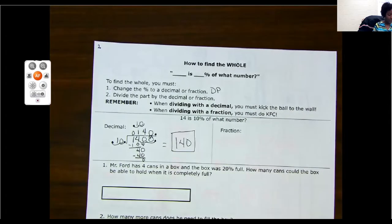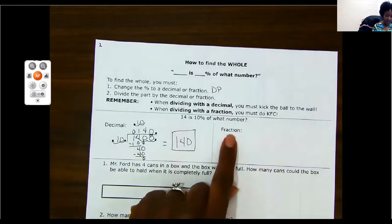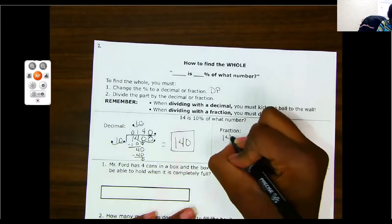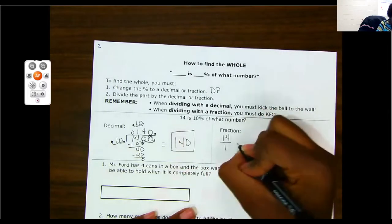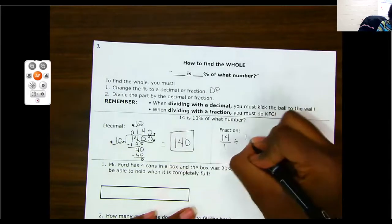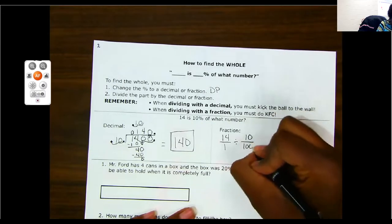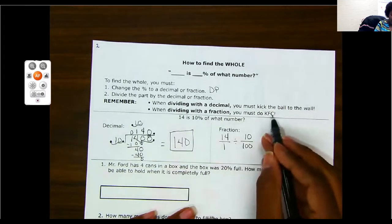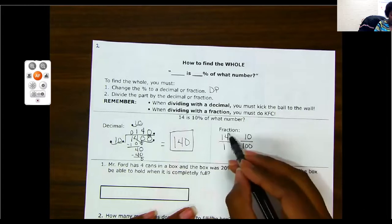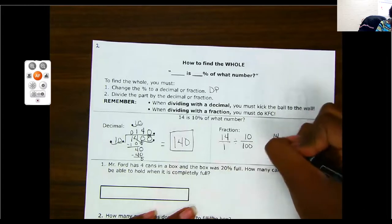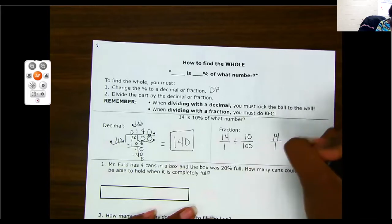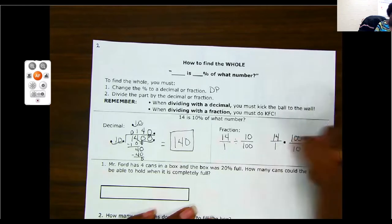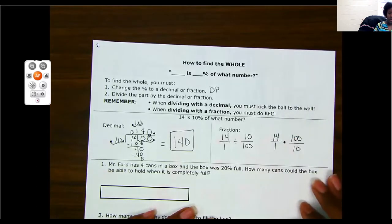Okay, that's using the decimal version. Let's try it as a fraction. To change 14 to a fraction, I need to put it over one. And 10% as a fraction is simply putting it over 100. Remember, I can't divide a fraction. I have to do KFC. So I need to keep, I need to flip, and I need to change. I can cross simplify this.